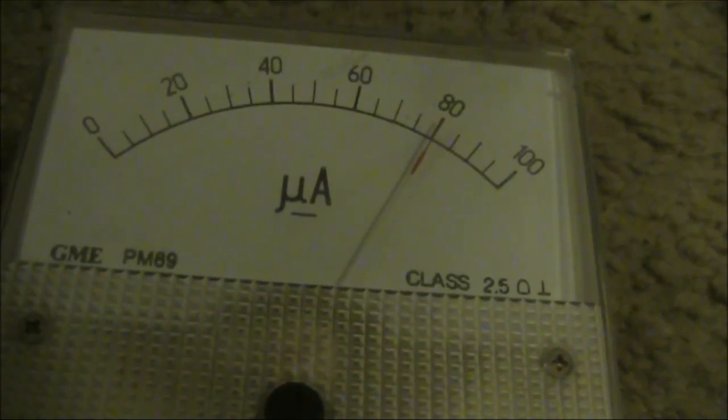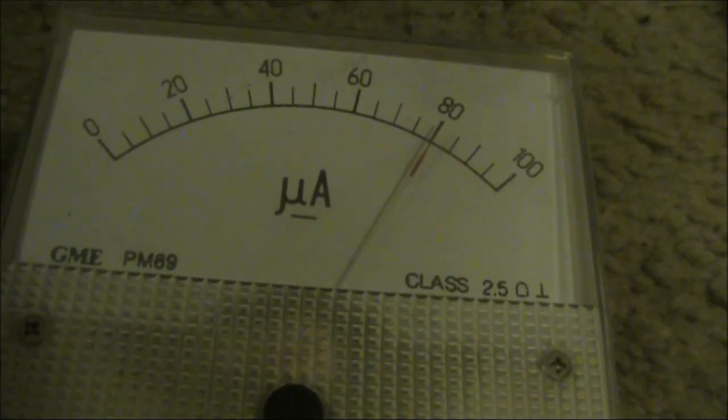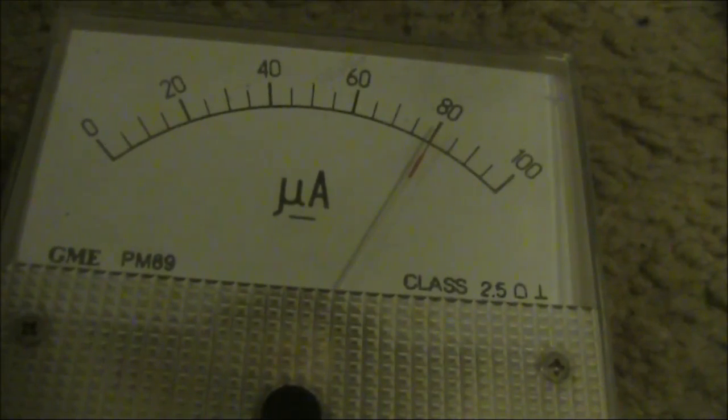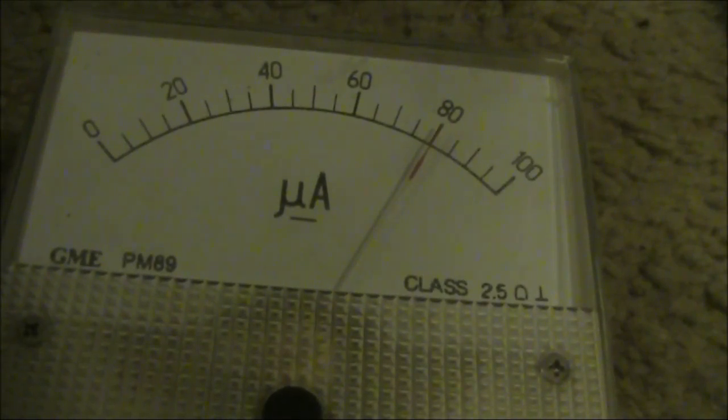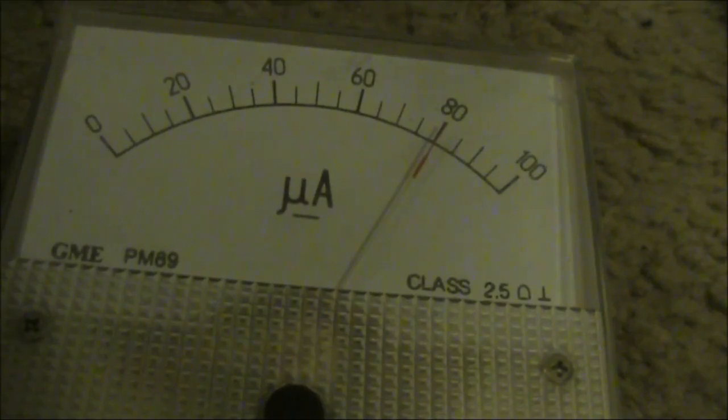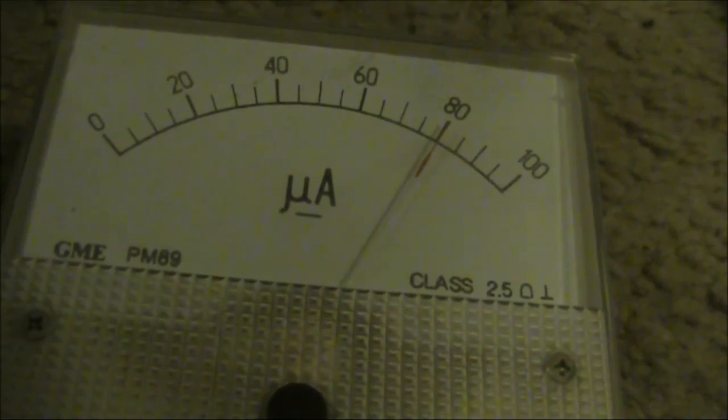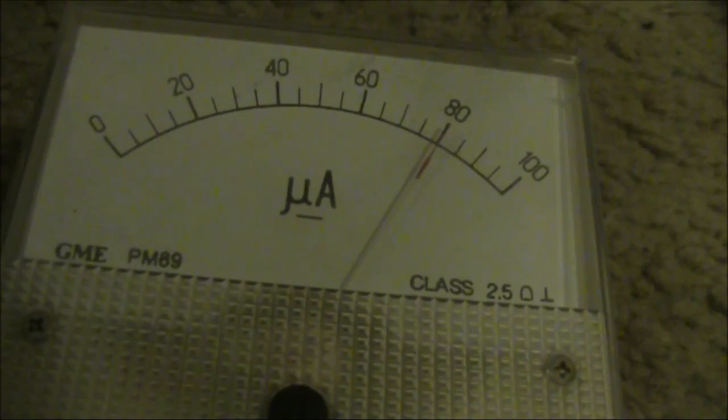I experimented with changing the input drive from half a watt up to one watt, then two and a half watts and five watts, and the reading hardly changed. So I suspect even at half a watt from the FT817, I might be over-driving the balance modulator for the number of diodes that I've got.